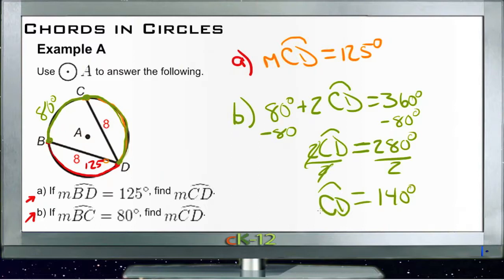And we get CD is equal to half of 280, or 140. So you can see in the second question here in part B, CD is 140 degrees, whereas in the first part it was 125 degrees. So don't let that confuse you.